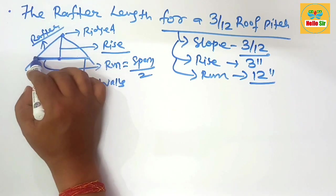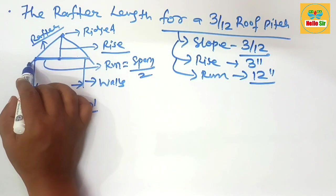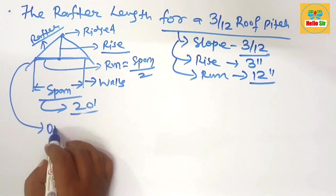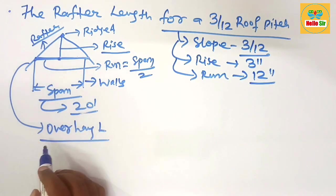Here you have to figure out this length of rafter for a 3 by 12 roof pitch, and this is the overhang length of the rafter.